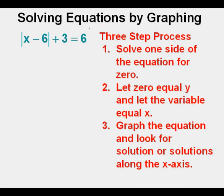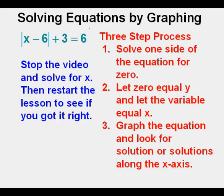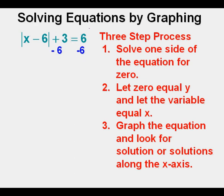We are going to go over one final problem today, solving for this equation. The absolute value of quantity x minus 6 plus 3 is equal to 6. Stop the video and see if you can solve it yourself by graphing. Then restart the video to see if you got it right. Step one, solve for zero by subtracting 6 from both sides of the equation. 6 minus 6 cancel on the right side. On the left side we have the absolute value of quantity x minus 6 minus 3.